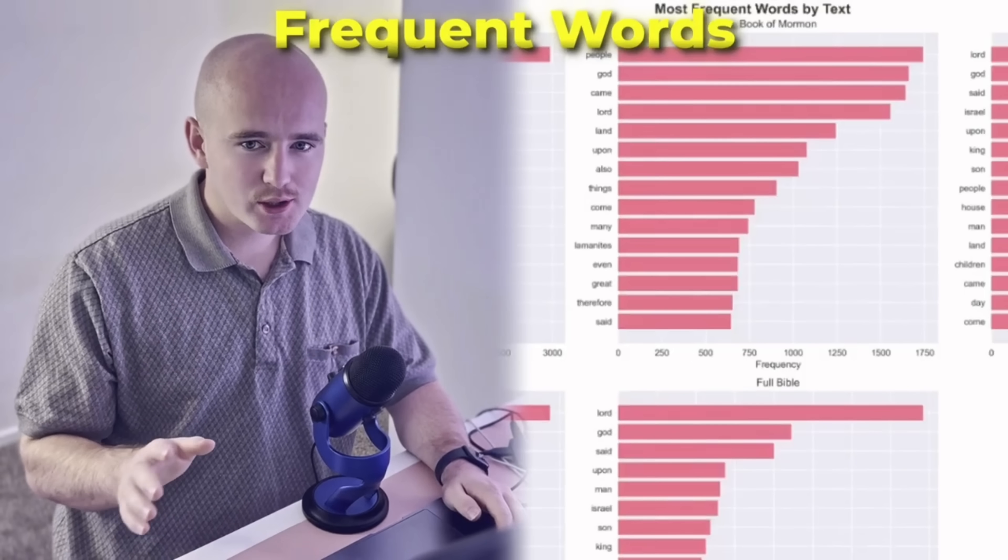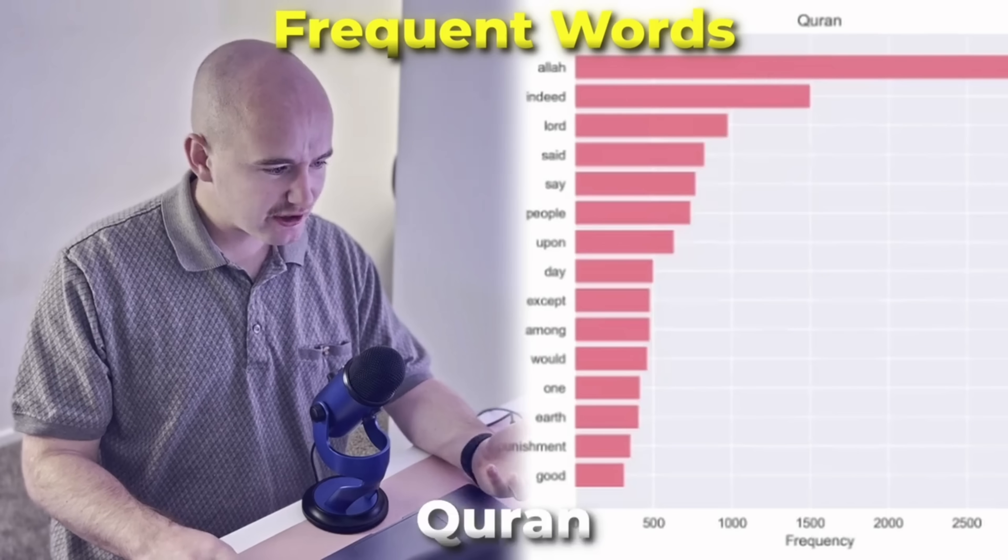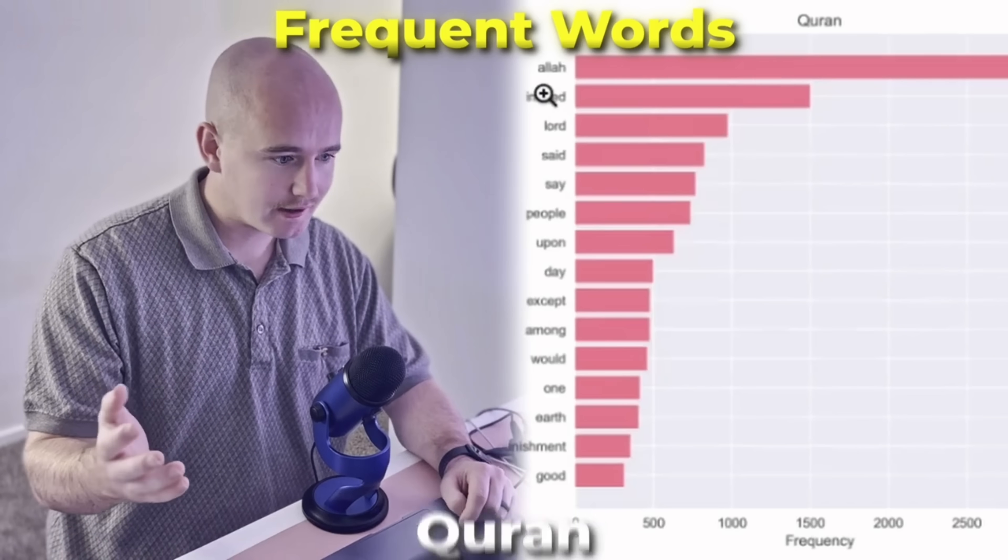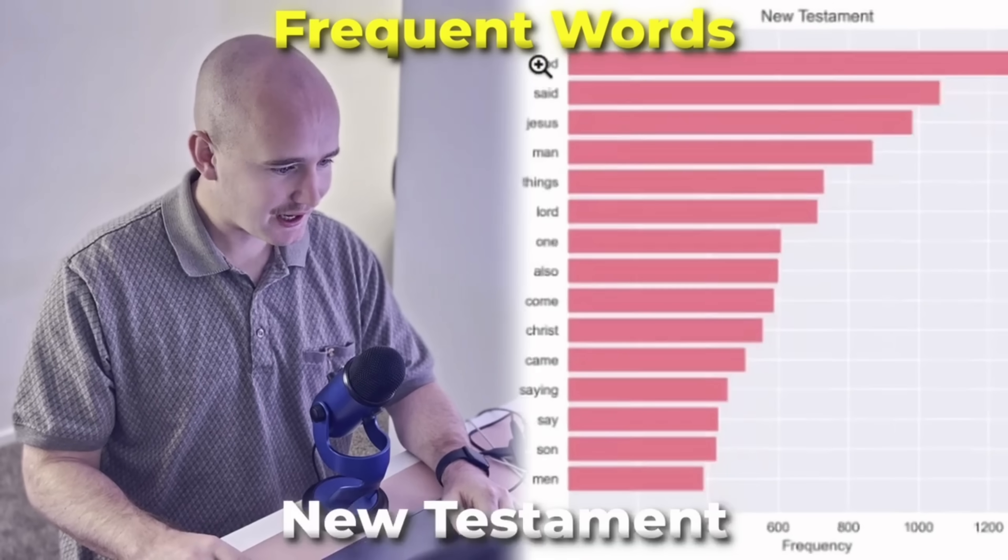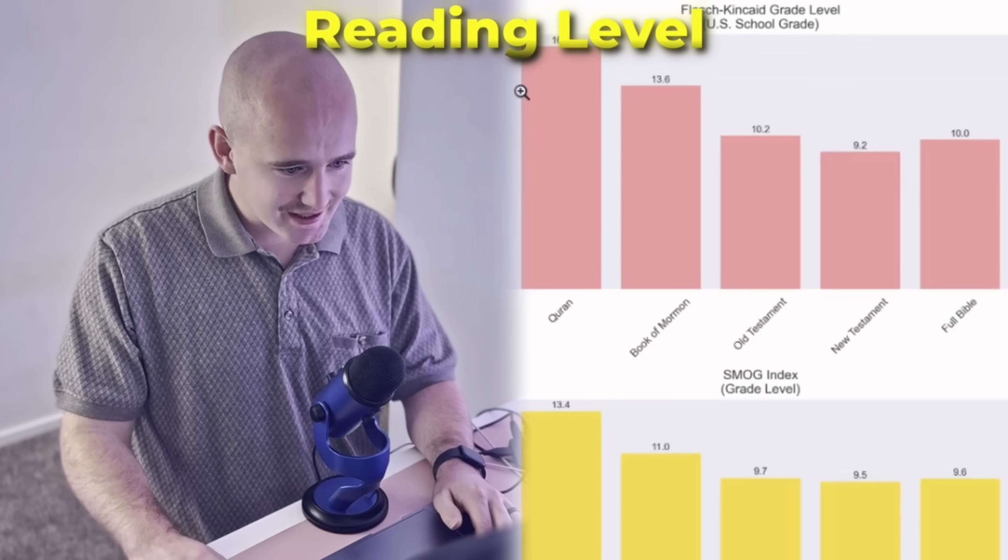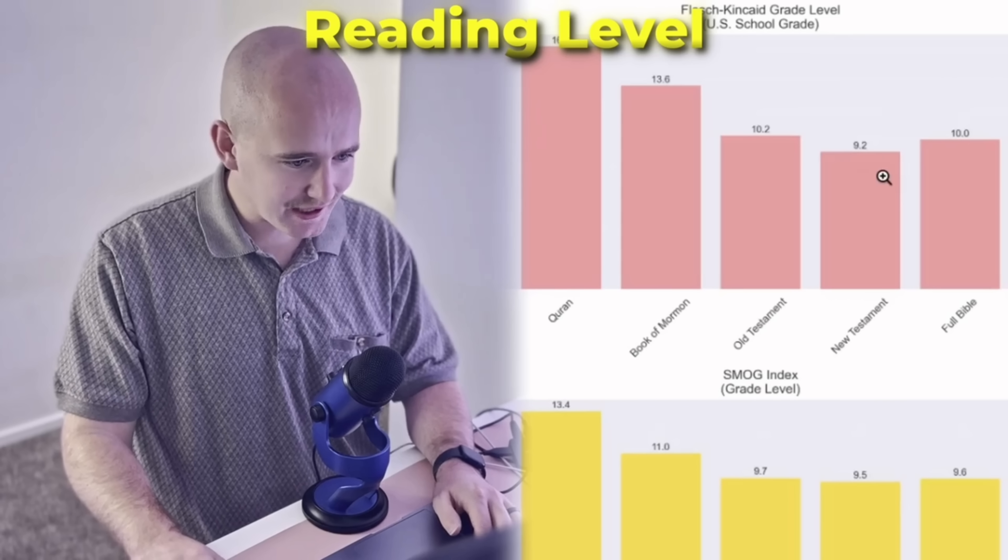I also analyzed the most frequent words used in each of the books. And so in Quran, the most frequent word is Allah, which means God. For the Book of Mormon, the most common word is people. In the Old Testament, it is Lord. And the New Testament is God. And then the last summary statistic that I wanted to get was the reading level. The Quran is the highest, and the New Testament is the lowest at a ninth grade reading level.